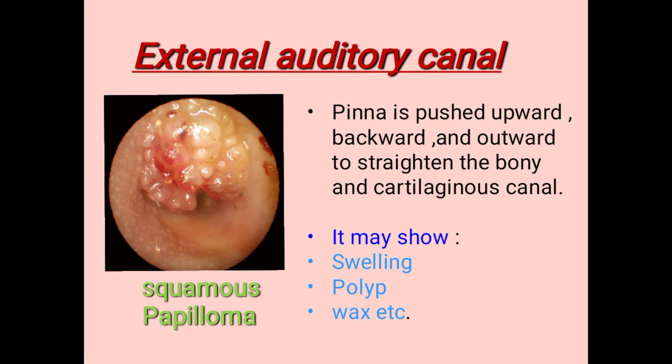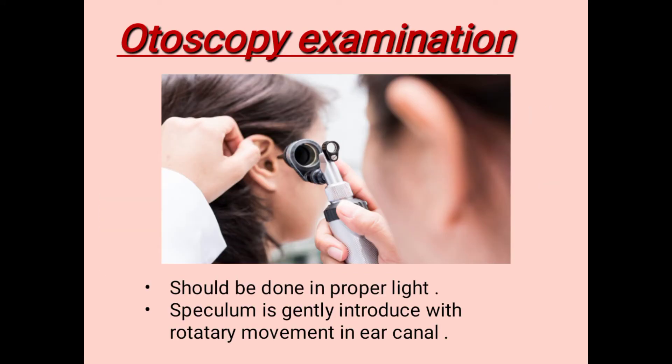The external auditory canal, also called the EAC, is examined next. To examine the EAC, we should push the pinna upward, backward, and outward to straighten the bony and cartilaginous canal. It may show swelling, polyp, wax, discharge, and so on. Next is the otoscopic examination, for which we use a speculum.